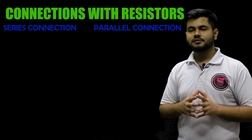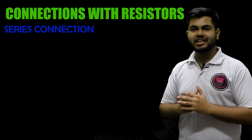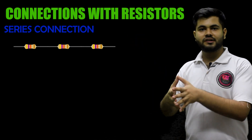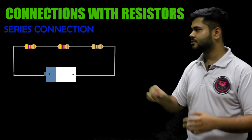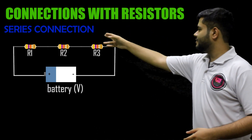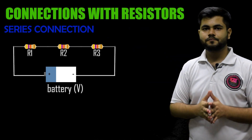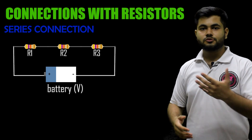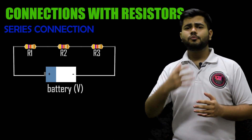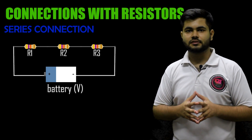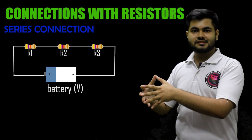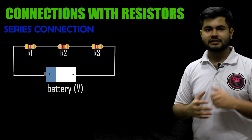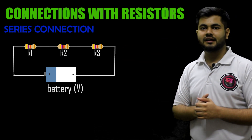Starting with the series connection — as the name suggests, there are more than one resistors (two, three, or any number) and you connect them one after another in series. Now the question is why do we connect them in series or in parallel? The basic answer is that at times you may not have a suitable value of resistor, so to get a suitable value using the resistors available, we do these connections.